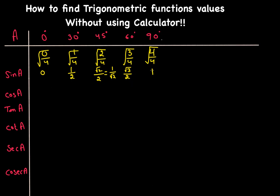For cosine, you don't have to do anything new — just flip the sine values. So 1 goes to the 0° position, √3/2 moves to 30°, the middle term (√2/2) stays at 45°, 1/2 goes to 60°, and 0 goes to 90°. Notice that sine and cosine have the same value at 45°, which is 1/√2.